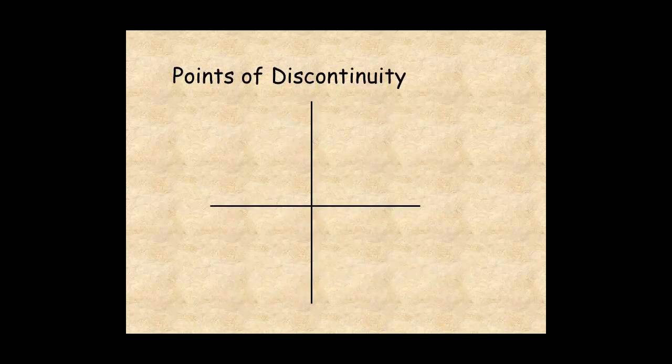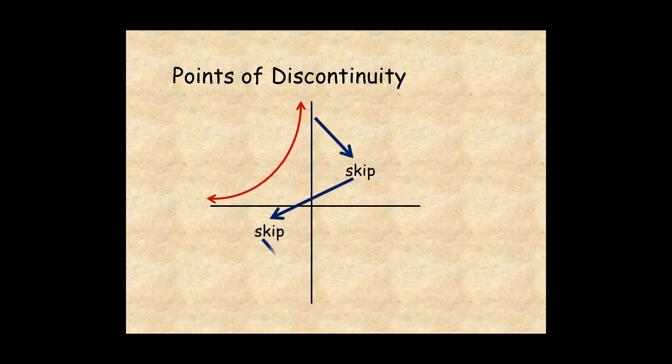A point of discontinuity is a place where the function fails to be continuous — where there is a break in the graph of the function. A place where, if you were graphing the function, you would have to lift your pencil from the graph paper, skip over a part of the graph, then put your pencil back down and continue the graph.